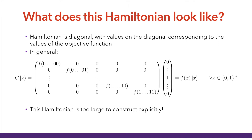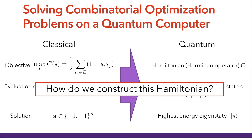What we're going to do is never construct this Hamiltonian explicitly. Instead, we're going to develop compact formulations and construct this operator from basic building blocks — Pauli Z operators — building a compact, polynomial-size representation for this operator. This lets us solve it on a quantum computer without having to construct it explicitly and deal with the exponentially sized operator classically. So how do we construct it? First, I'm going to show you how to construct it for the MaxCut problem as a simple example.